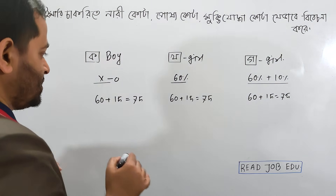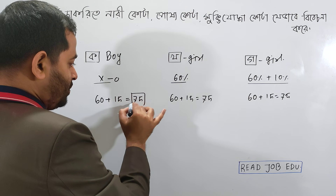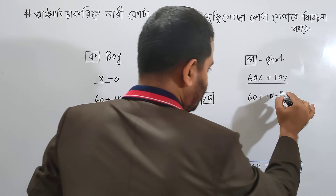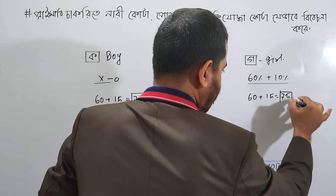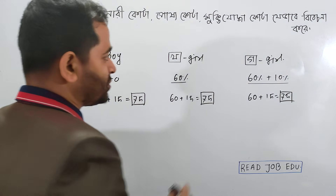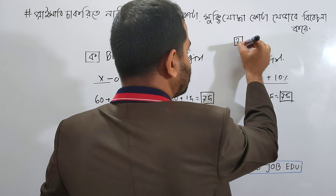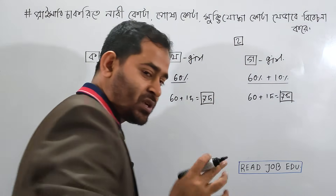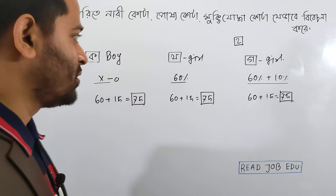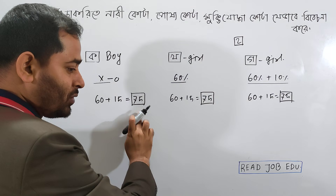That means 60 plus 15 equals 75. That means we have to look at the first one being 75, the second one being 75, and the second one is 75. As you can see, there are 2 candidates and 2 candidates.